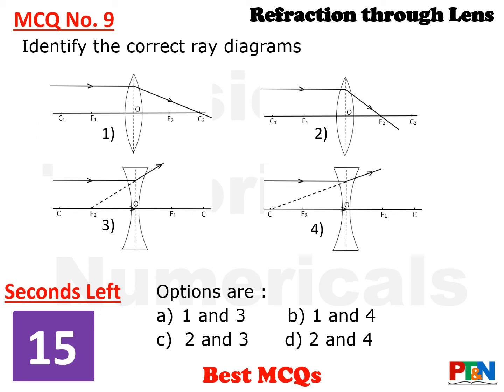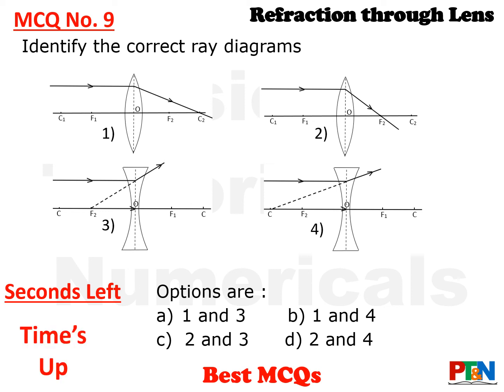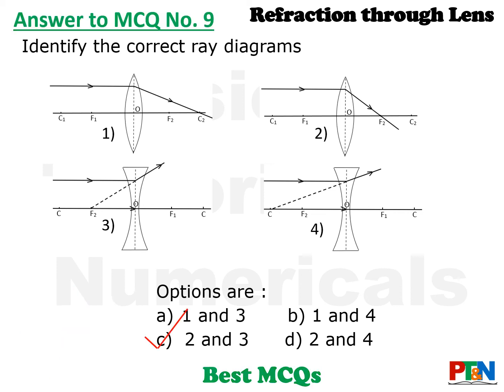Next MCQ. Identify the correct ray diagram from the four ray diagrams given. Choose from the options. 15 seconds time. Time is up. Option C is the correct answer. For option A, it is shown that a parallel ray after passing through the lens will move through center of curvature — no, it moves through focus. Same for option D — it appears to come from center of curvature, but it should appear to come from focus. So diagrams 2 and 3 are correct, making option C the answer.